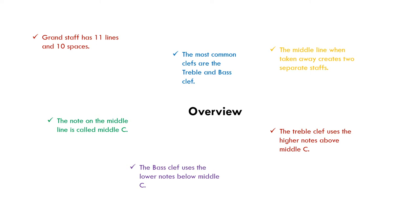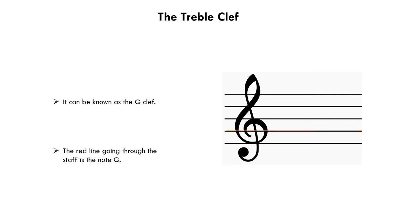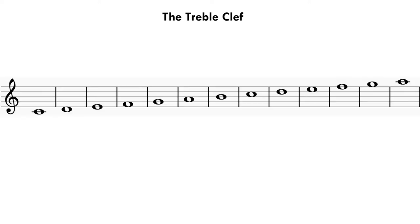We can now focus on the two individual clefs. Let's start with the treble clef. Another name you might hear it called is the G clef. This is because that red line going through the clef is the note G. The first note that you can see is middle C — this is where the note sits on the treble clef. Starting from there we can work out the rest of the notes.